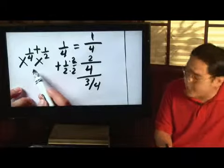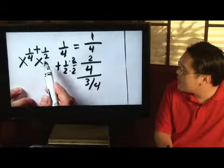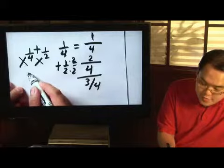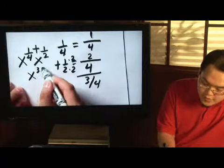So that means at the very end, x to the one-fourth times x to the one-half is going to give me x to the three-fourths power.